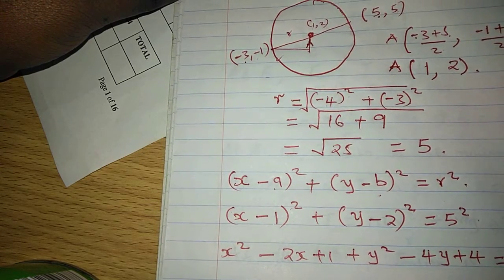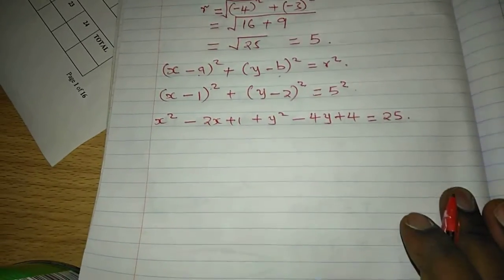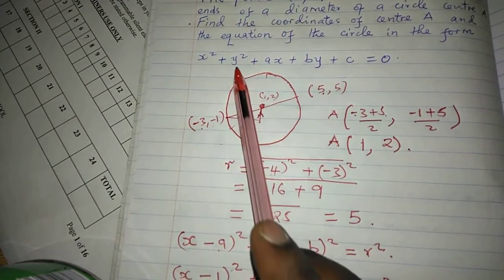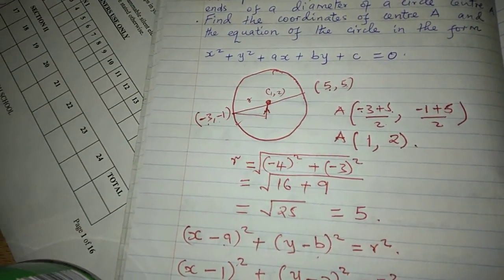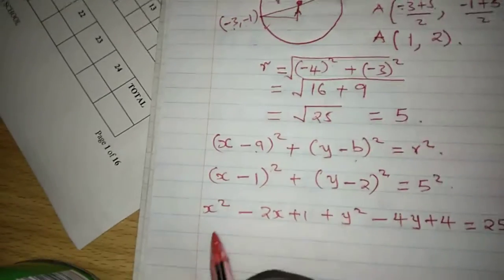equals 25. Because of the format in which we've been taught to express this equation, which is the format x² + y² + ax + by + c = 0,